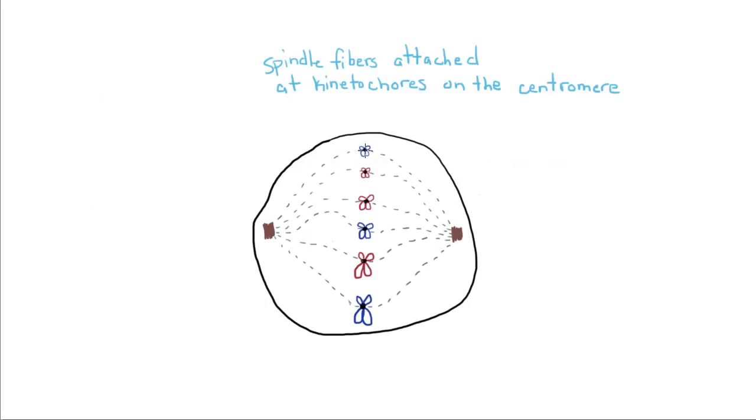And you can see in this drawing, all the chromosomes are lined up in the middle. The spindle fibers are attached, and the nucleus, nuclear membrane, is completely gone.